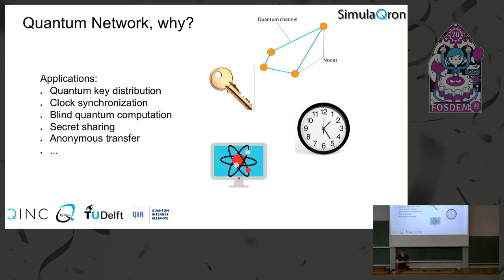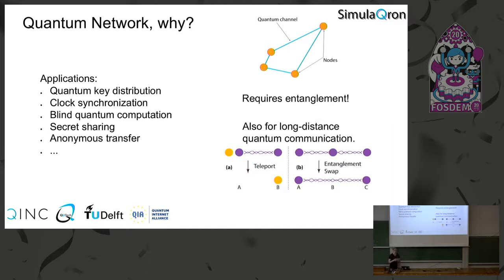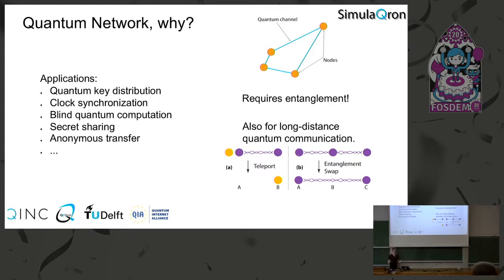For essentially all of these applications, what we need is entanglement — this is the fundamental operation that a quantum network enables. Compared to a classical network, where the fundamental operation is sending a classical message from one node to another, you might think the fundamental operation in a quantum network is to send a qubit. But in our view, the fundamental operation is to generate entanglement, which you can then use to send qubits via teleportation.